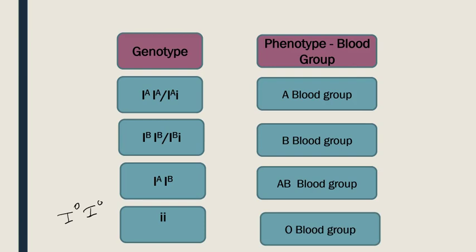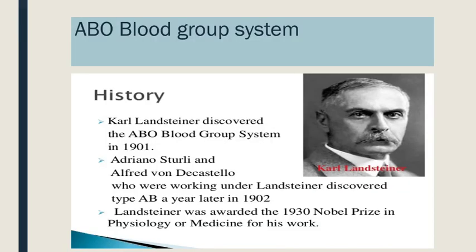Let us see how and why these blood groups occur like this. You can see a picture of Karl Landsteiner, a physician in the 19th century. He was treating a number of soldiers in a hospital and tried to transfer blood from a normal person to a wounded soldier. He found he was successful sometimes, but sometimes the recipient died. He carried out many experiments and found that there are different blood groups present in individuals. Karl Landsteiner's students Adriano Sturley and Alfred von Decastello further gave us the AB blood group. Later, one more of his students, Wiener, proposed the Rh system. He was awarded a Nobel Prize for his work in physiology and medicine in 1930.